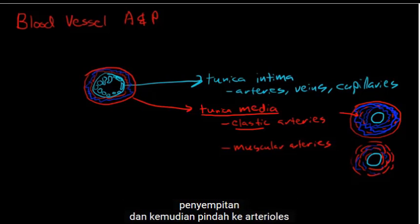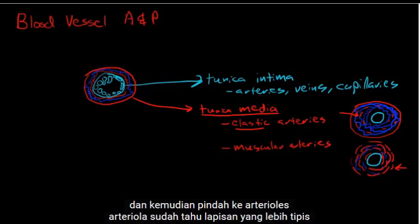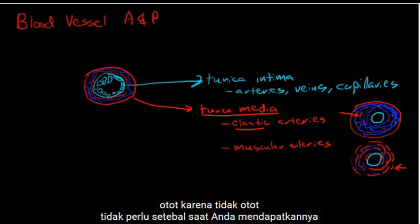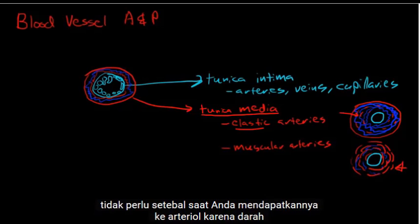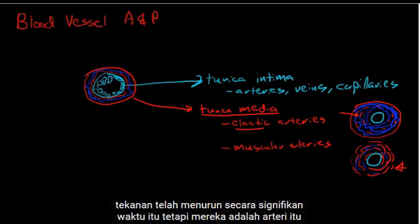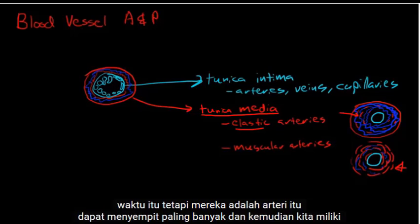Moving down to arterioles, they have a thinner layer of muscle because blood pressure has dropped significantly by that time. But arterioles are the vessels that can constrict the most.